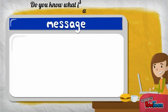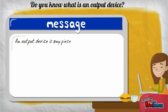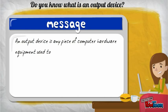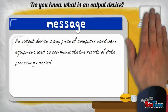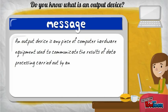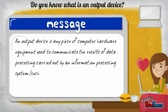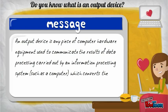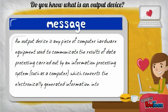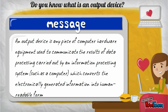Do you know what is an output device? An output device is any piece of computer hardware equipment used to communicate the result of data processing carried out by an information processing system such as a computer, which converts the electronically generated information into human-readable form.